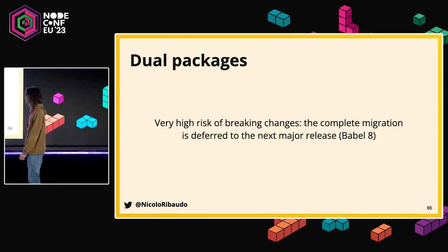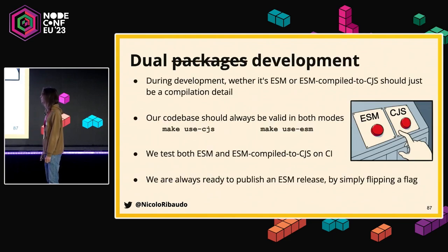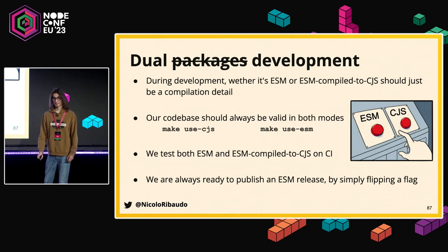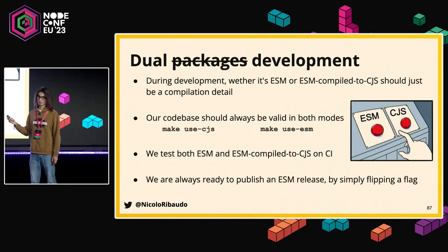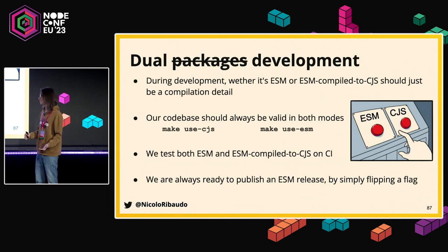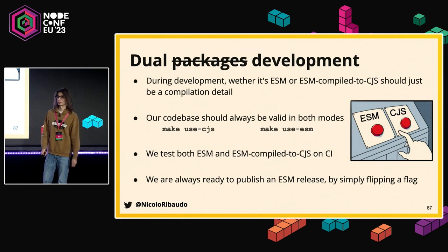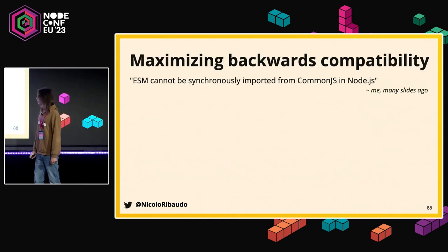We decided to wait until the next major release. However, we liked ESM and wanted to use it, so we started what we call 'dual development' — developing locally without compiling our files to CommonJS while our codebase remains able to run either way. By aligning our behavior with Node's built-in behavior, we eliminated differences. We test both the native ESM and the compiled-to-CommonJS versions, and we're always publishing the same release — we just pass a flag to our build script.